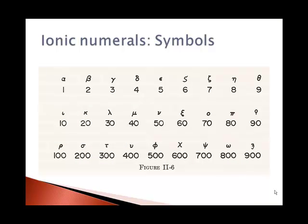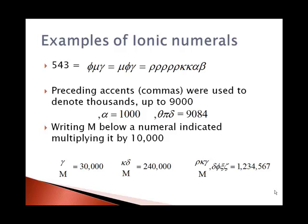For an ionic numeral, there's lots of ways to do this. Again, for 543, phi is 500, mu is 40, gamma is 3, so phi, mu, gamma would be 543. But again, this is not a positional system, so mu, phi, gamma would be 543. But also, since rho means 100, we could use 5 rhos. Since kappa means 20, we could use 2 kappas. And since alpha is 1 and beta is 2, we could use alpha and beta. This way, you could actually spell a word and give a numerical value along with it.